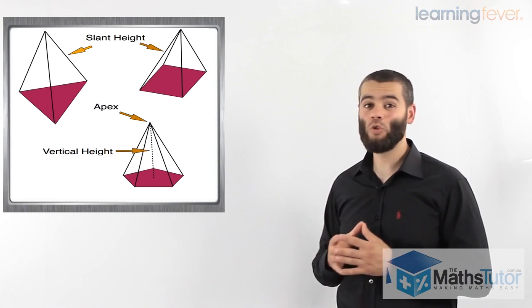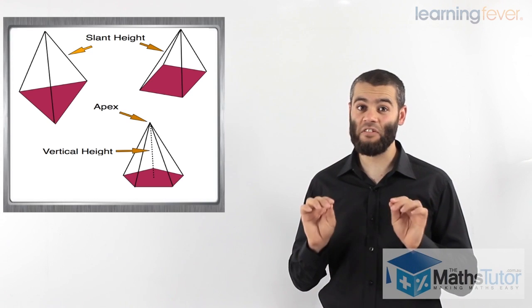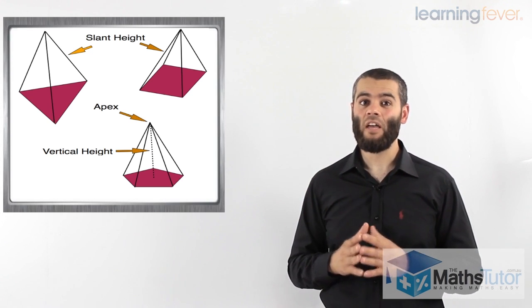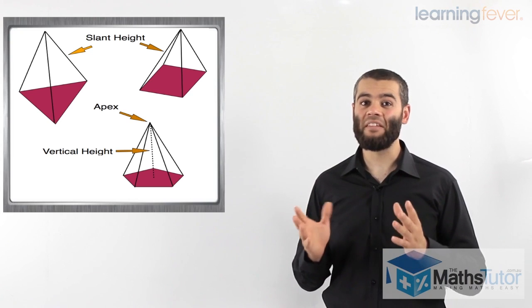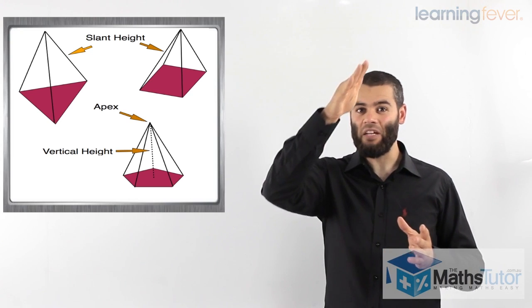Now, pyramids have two types of heights. This is critical that you understand. Two types of heights. They have what we know as the slant height, which is the height that is slanting.